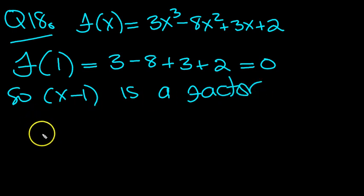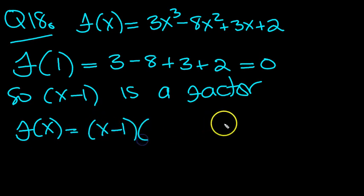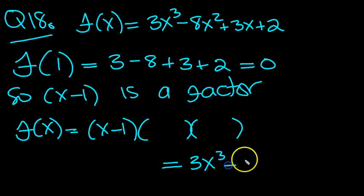As such, we'll be able to write f of x is equal to x minus 1 times something equals the 3x cubed minus the 8x squared plus 3x plus 2.